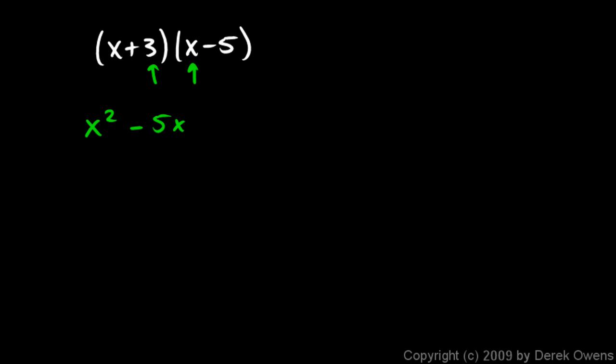The inner two terms are the 3 and the x, so this is plus 3x. And then the last terms are 3 and negative 5, so that gives me -15. And again don't forget that negative sign. And then as before I can combine my like terms, in this case the -5x and 3x, and I get x² - 2x - 15.